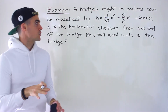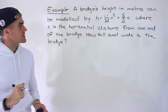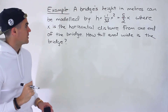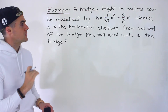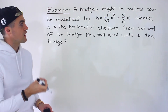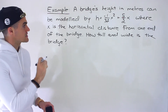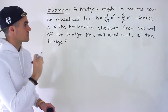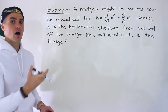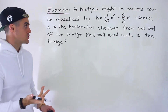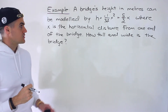In this question, we're told that a bridge's height in meters can be modeled by h = -1/32 x² + 5/2 x, where x is the horizontal distance from one end of the bridge. How tall and wide is the bridge?